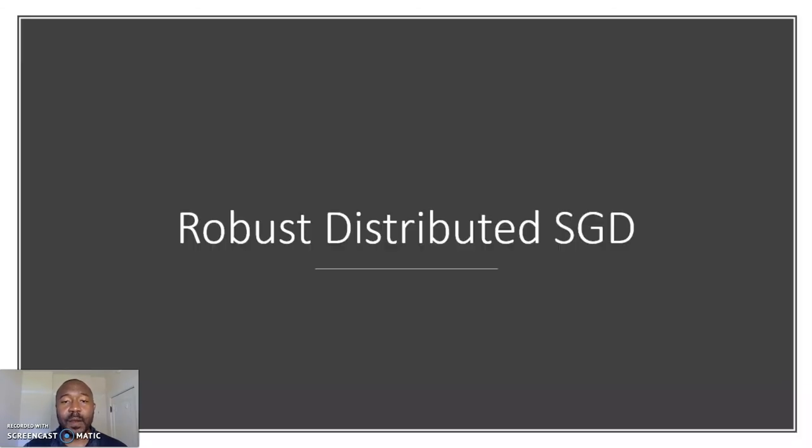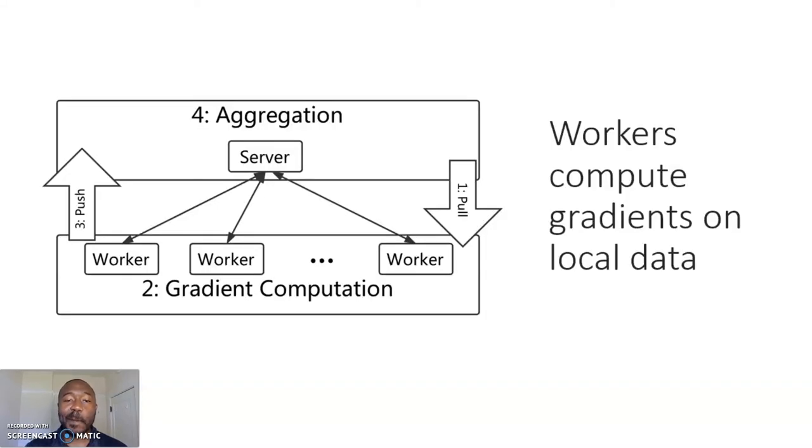Let's begin with robust distributed stochastic gradient descent. For robust distributed SGD we will focus on the centralized model. Here the workers pull the current model from the server, compute local gradients, then push this gradient to the server for aggregation.